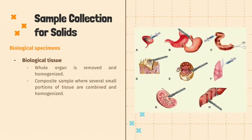For biological tissues, in order to collect it, the entire organ is first removed and then homogenized. Alternatively, several small portions of tissue can also be combined to form a composite sample, which is also then homogenized.